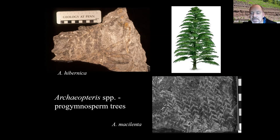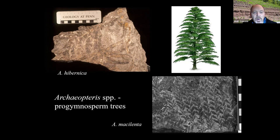The species concept involves a lot of inferences — they might have just been different morphotypes. These were tall trees, maybe getting up to as much as a hundred meters tall. They had bifacial cambium, modern wood, but they reproduced through spores.